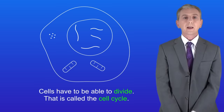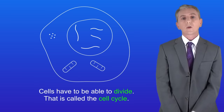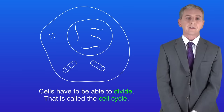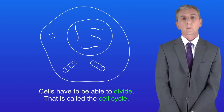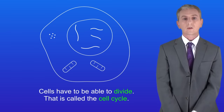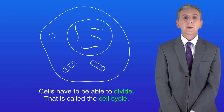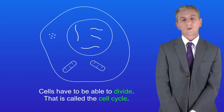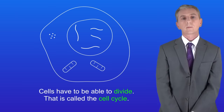Animals and plants contain a very large number of cells, so cells have to be able to divide — that's called the cell cycle. Cells can divide by either mitosis or meiosis. We'll be looking at meiosis in a later video; in this video, we're looking at mitosis.